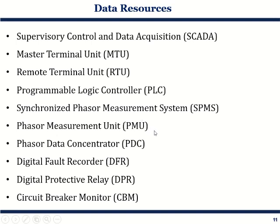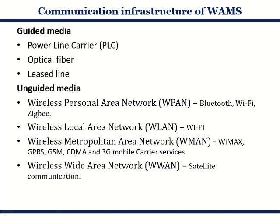Once the data is acquired, it has to be communicated. The communication infrastructure can be of two types: guided and unguided. Guided is the wired type — power line carrier, optical fiber, or leased line. These are the lined or wired media.